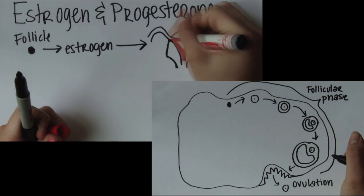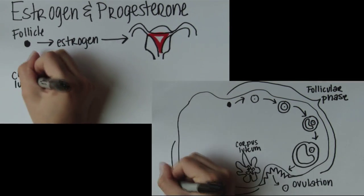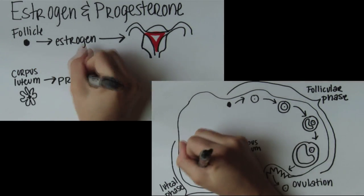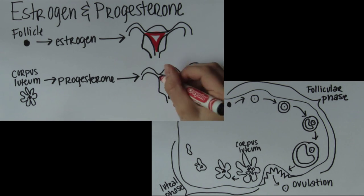After the follicle ruptures and ovulation occurs, it is changed into another structure known as the corpus luteum. During the last half of the cycle, known as the luteal phase, the corpus luteum will begin to secrete increased amounts of progesterone that will help maintain that layer and prepare it for implantation of the egg.